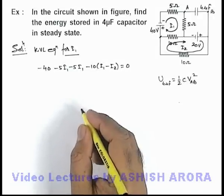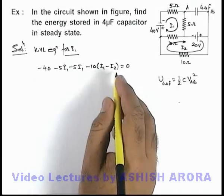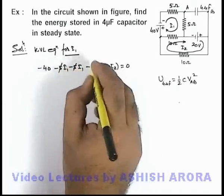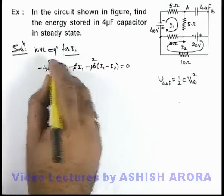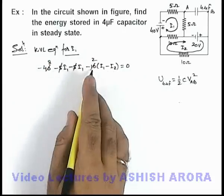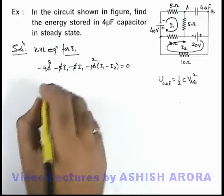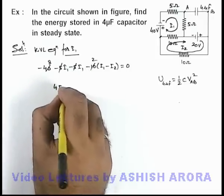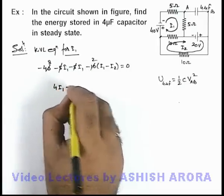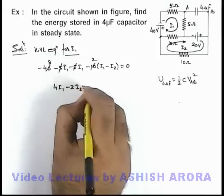In this situation, if we further simplify this equation, we can cancel this 5, this'll be 2 and this'll be 8. So on simplifying you can see we are getting 4i1 minus 2i2 equals minus 8.